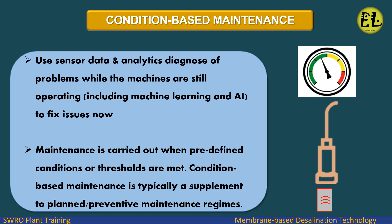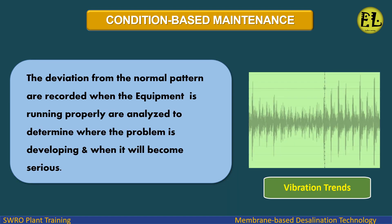Condition-Based Maintenance is typically a supplement to planned and preventive maintenance regimes. Deviations from the normal pattern — recorded when the equipment is running properly — are analyzed to determine where a problem is developing and when it will become serious.